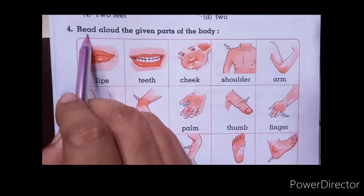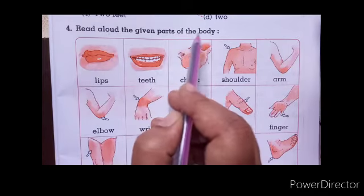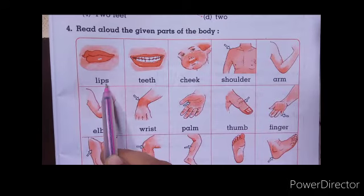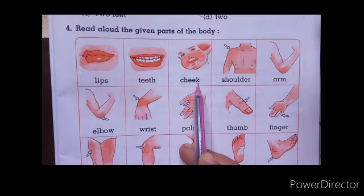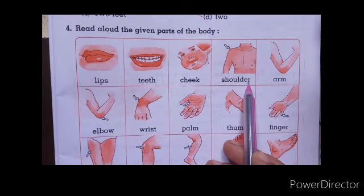Question number four, read aloud the given parts of the body. L-I-P-S lips, T-E-E-T-H teeth, C-H-E-E-K cheek, S-H-O-U-L-D-E-R shoulder.